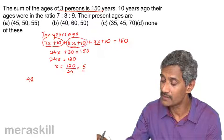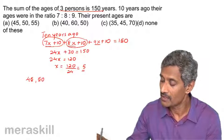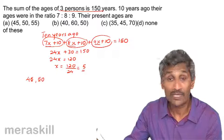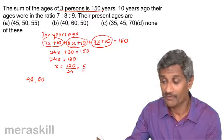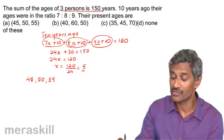8x plus 10, that is 8 into 5, 40 plus 10, 50. Then 9x plus 10, 9 into 5, 45 plus 10, 55. So the current ages are 45, 50 and 55.